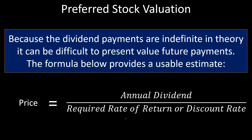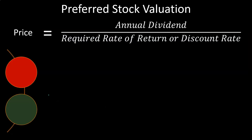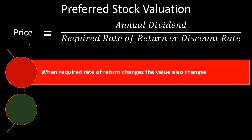We can think of an equation where we're trying to figure out future cash flows present valued indefinitely into the future. We can't build a standard formula for indefinite payments, but we can use a simplified formula: the formula below provides a usable estimate. The price or valuation equals the annual dividend divided by the required rate of return — where the required rate of return is the discount rate, essentially the market rate. So: Price = Annual Dividend ÷ Required Rate of Return.